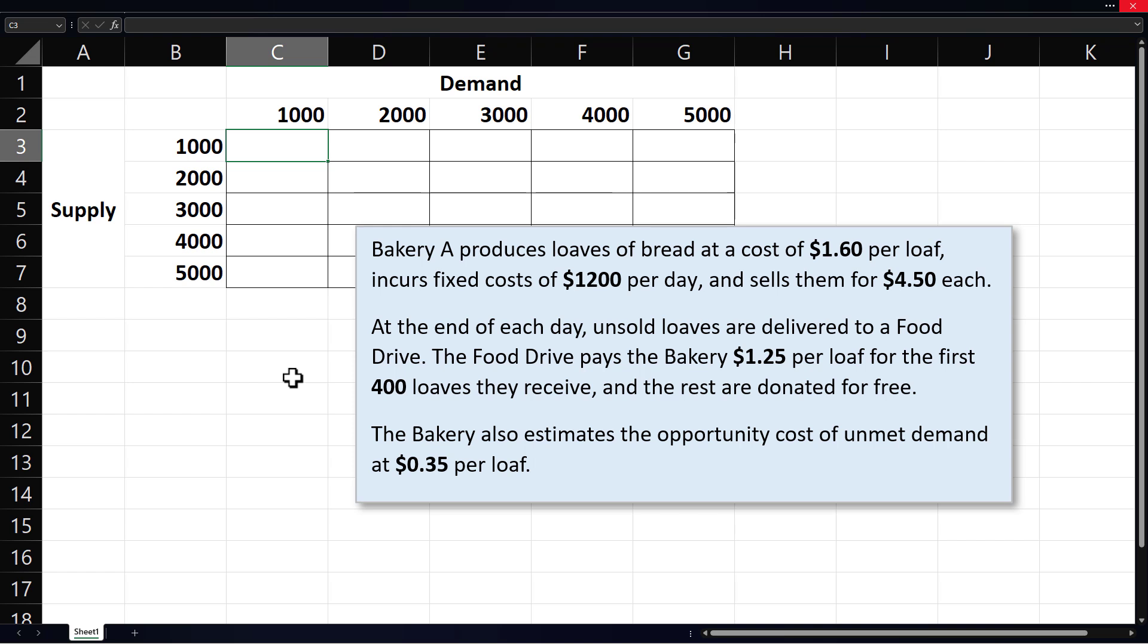Since the selling price is $4.50, revenue is calculated as 4.5 times the demand amount. However, we need to account for the fact that they can't sell more than they produce. So, units sold will be the minimum of the amount sold and the amount produced.